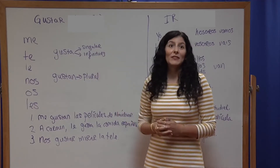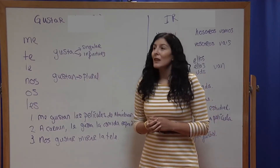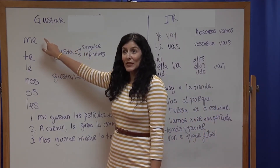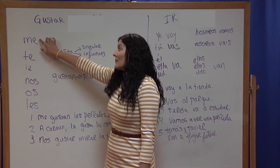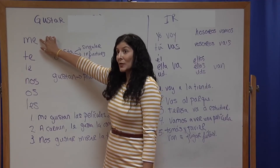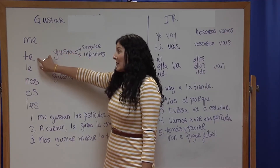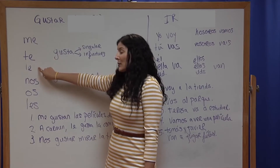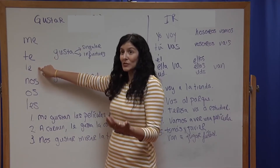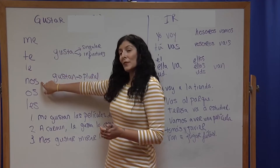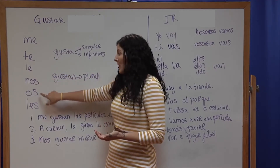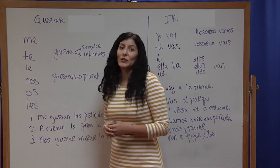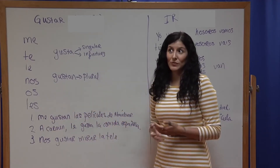We choose gusta or gustan based on whether the activity is an infinitive. Each pronoun has an association with another pronoun: me for the yo form, te for the tú form, le for the él/ella/usted form, nos for the nosotros form, os for the vosotros form, and les for the ellos/ellas/ustedes form.